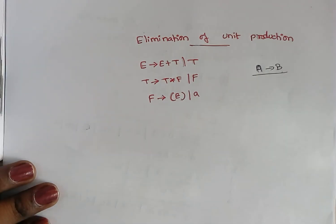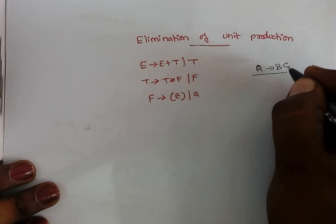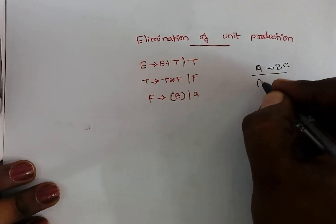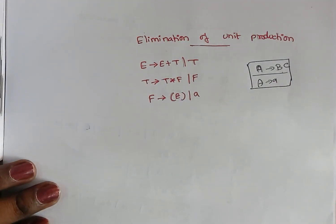The reason why we want to eliminate a unit production is to convert it to Chomsky Normal Form. The generalized structure for Chomsky Normal Form is a variable tends to two variables, or a single terminal symbol. That is either two variables or a single terminal symbol. This is the only structure that is allowed for a Chomsky Normal Form conversion.